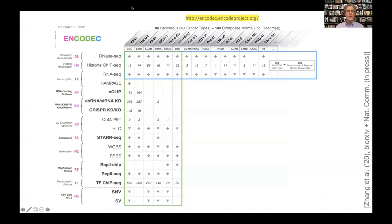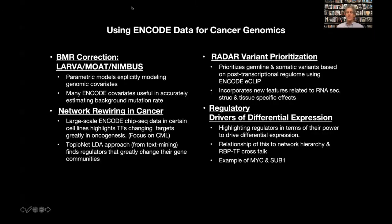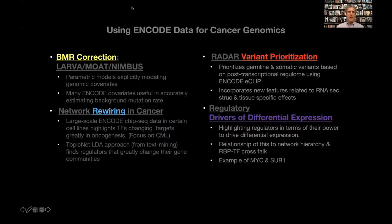Furthermore, a number of these cell lines — K562, HEPG2, and so forth — are extremely data-rich and have a tremendous number of assays on them, really unprecedented for studying oncogenesis. I'm going to talk about using this data in four ways: background mutation rate correction, studying network wiring, variant prioritization, and looking at drivers of differential expression.